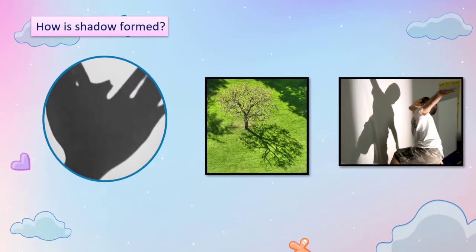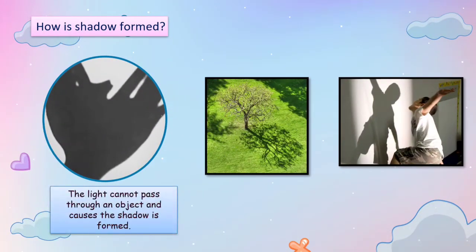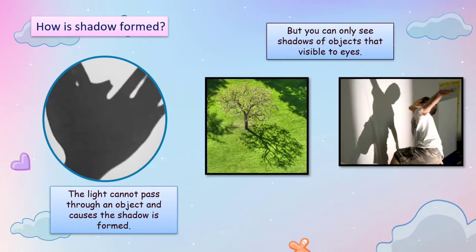How is a shadow formed? A shadow is formed when light cannot pass through an object, and that causes a shadow to form. But you can only see shadows of objects that are visible to the eyes. For example, a tree will have a shadow like this, and so does a human.